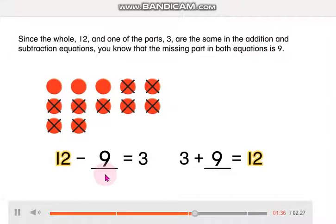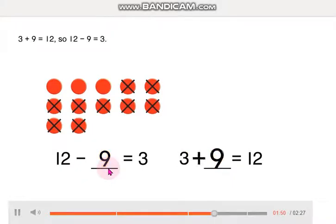Since the whole, 12, and one of the parts, 3, are the same in the addition and subtraction equations, you know that the missing part in both equations is 9. 3 plus 9 is equal to 12. So 12 minus 9 is equal to 3.